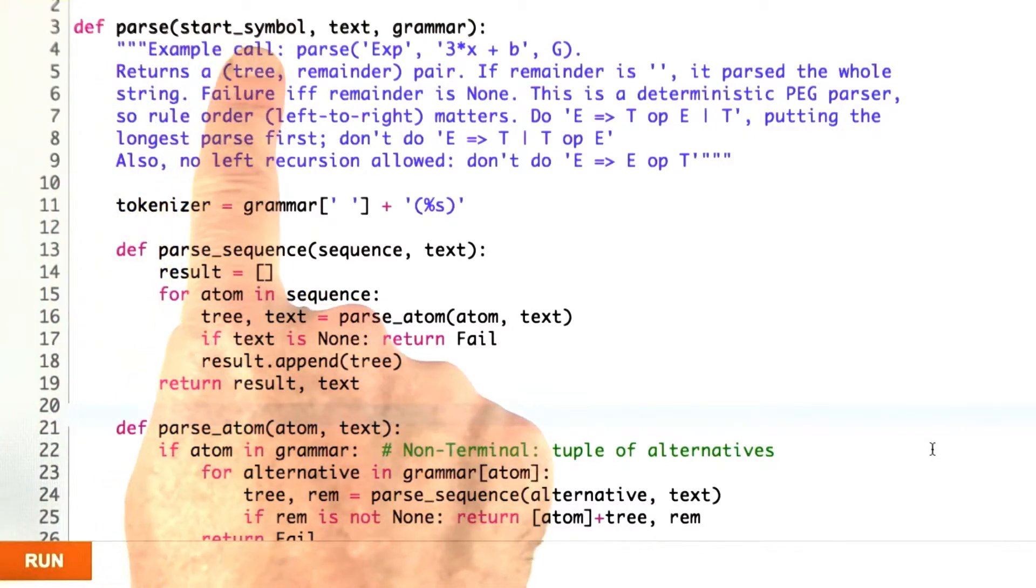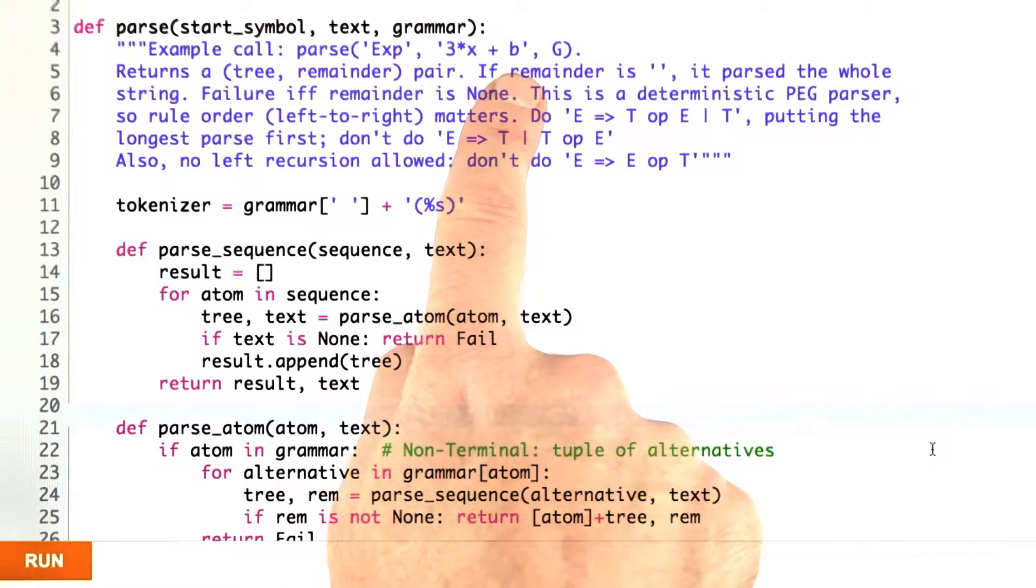Here we go. Here's the function parse. It takes a start symbol like expression, it takes a text like 3x plus b, and it takes a grammar defined with our grammar function.